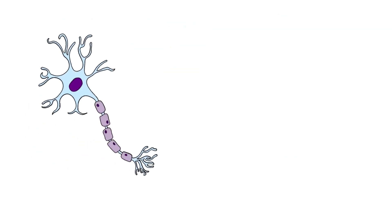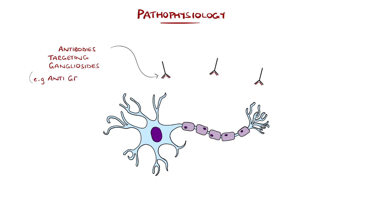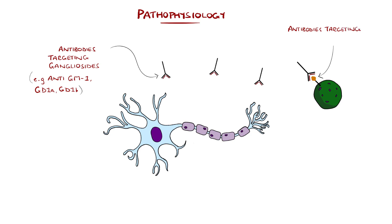These antibodies are mostly targeting gangliosides, which are molecules made up of lipids and carbohydrates found particularly in the cell membranes of nerves. Examples of these antibodies include anti-GM1, GD1a, and GD1b. The exact mechanism is not clear, but may be due to molecular mimicry, where antibodies are generated against a particular antigen, possibly from a microbe, that then also cross-reacts with the gangliosides.